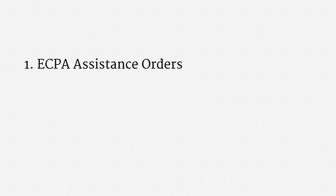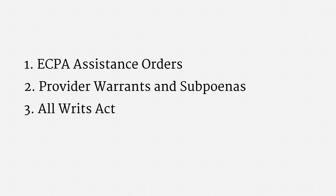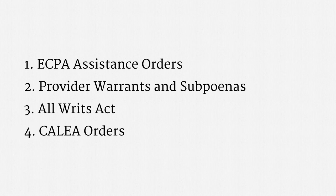There are four main ways in which law enforcement can compel assistance with current surveillance. First, assistance orders under the Electronic Communications Privacy Act. Second, provider warrants and subpoenas might be viable as tools for assisting with surveillance. Third, orders under the All Writs Act — that old statute enables law enforcement to compel assistance in executing a warrant. Last, the Communications Assistance for Law Enforcement Act allows for orders in conjunction with current surveillance.